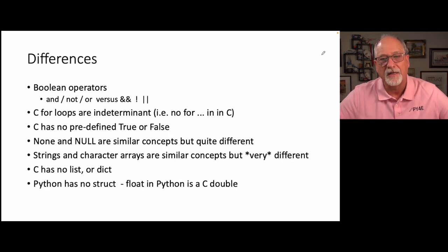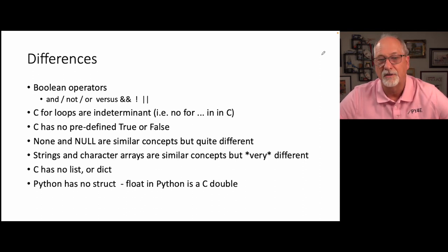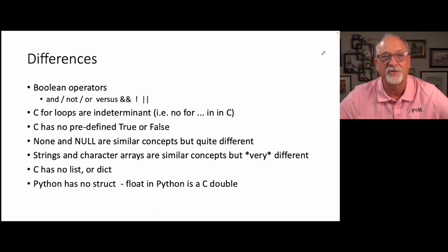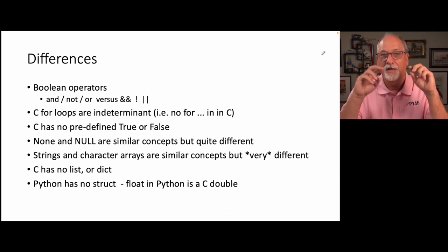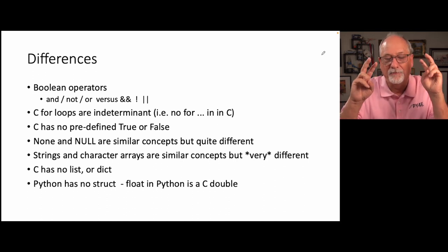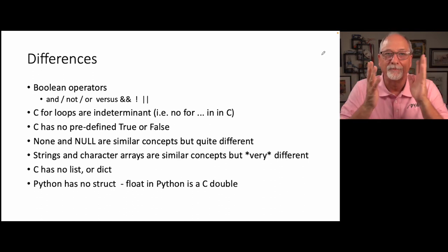There are some differences. I think Python's design was trying to be a little less obtuse and a little more convenient. It's annoying to me — I write the C versions of the operators like and as double ampersand, not as exclamation point (we call that bang), or double vertical bar. In Python they use the words and, or, not, but okay, whatever.